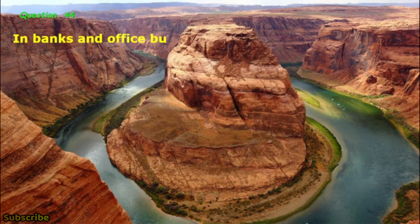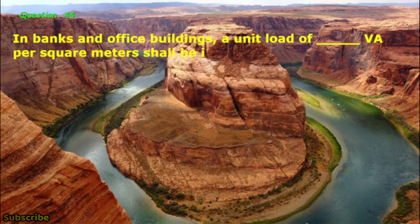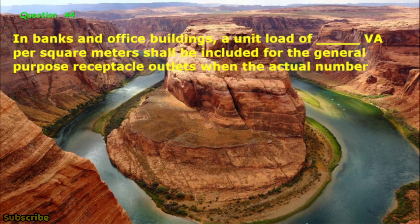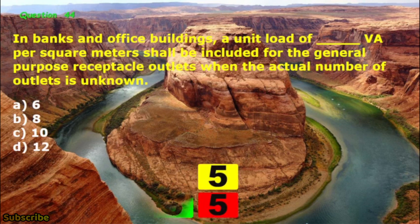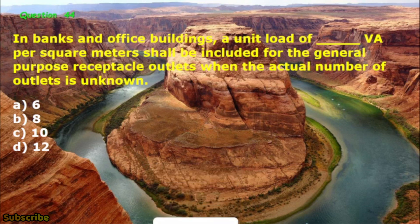Question No. 44: In banks and office buildings, a unit load of blank volt-amperes per square meter shall be included for the general purpose receptacle outlets when the actual number of outlets is unknown. A. 6, B. 8, C. 10, D. 12. The correct answer is letter B: 8.